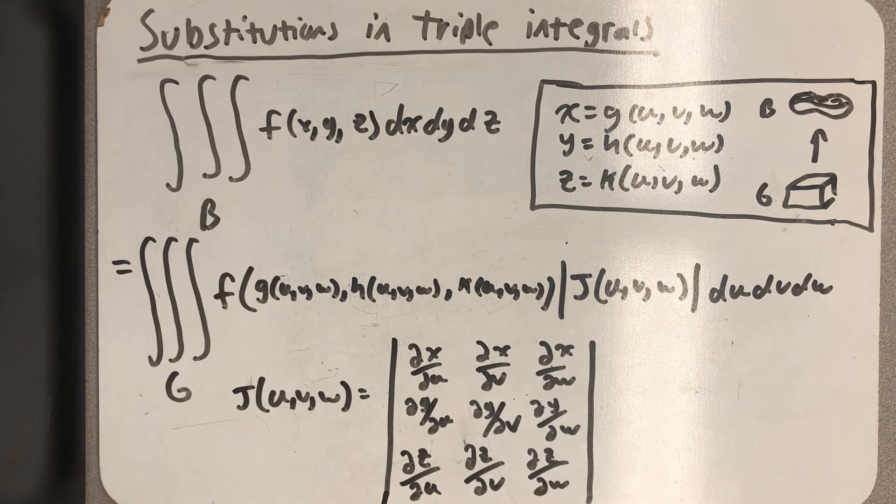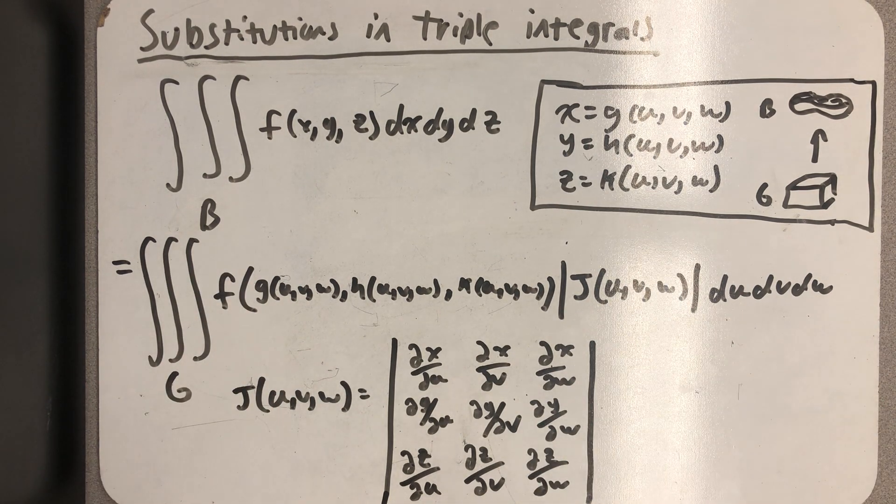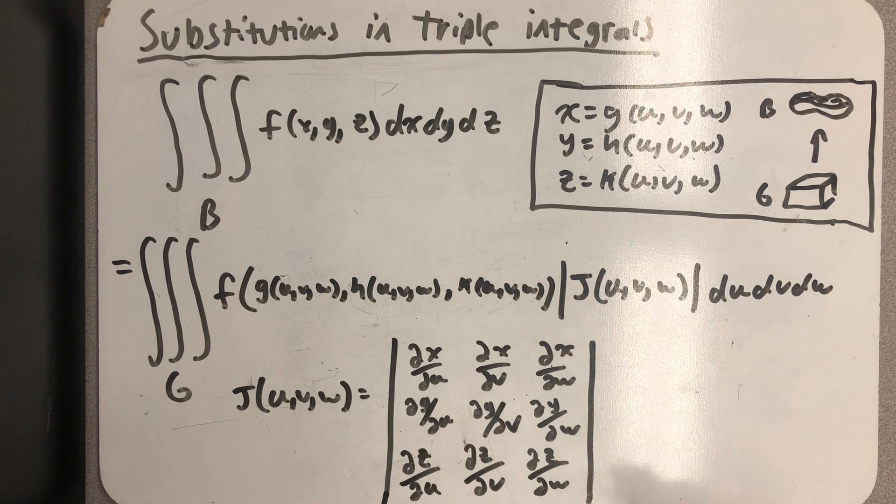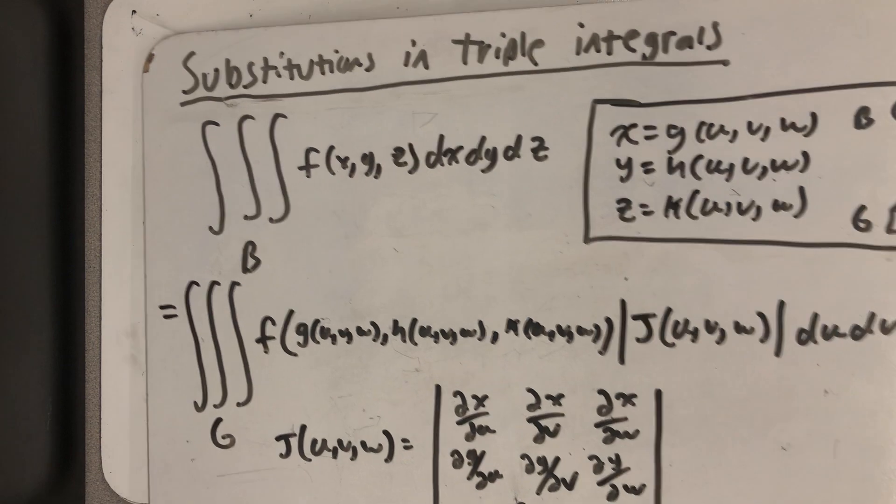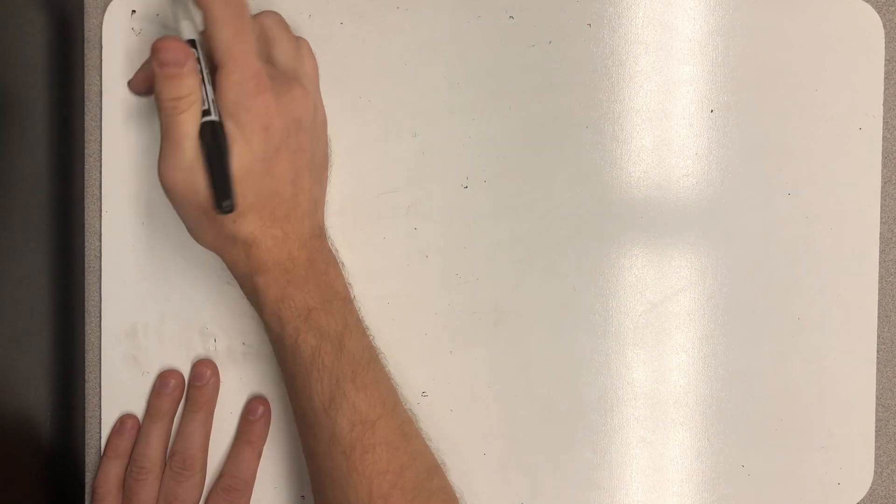So we need to do examples. We need to actually evaluate a triple integral using a substitution. But I thought in this video we would just find a Jacobian. But more than that, I thought we'd find the Jacobian for a substitution that we've used already.